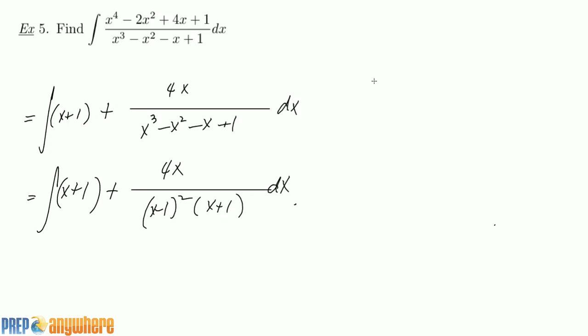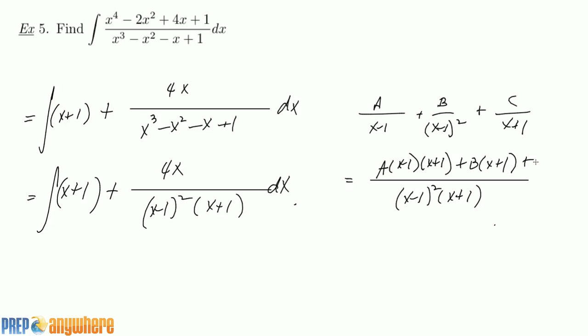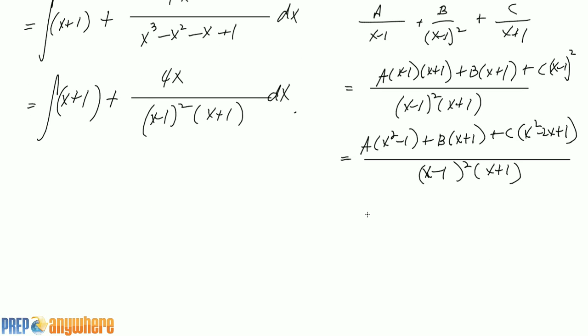So we have to compare this fraction with this: A over x minus 1, plus B over x minus 1 squared, plus C over x plus 1. And we get this. Expand it one more, now finally we have to collect the same powers to express in standard polynomial form.